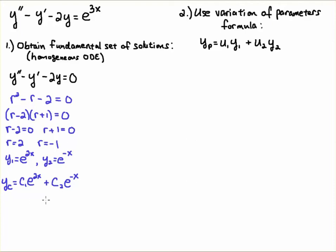Now we need the particular solution, because all solutions to ODEs have the complementary solution plus a particular solution. We're going to use the variation of parameters formula, which is constructed by taking an unknown function u1 times y1 — where y1 is e^(2x) — plus u2 times y2, where y2 is e^(-x). The whole difficulty in variation of parameters is finding u1 and u2, and that's what we're going to spend the rest of this video doing.